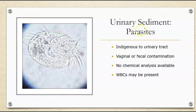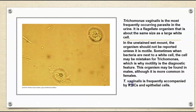Urinary sediment parasites. We can see parasites that are indigenous to the urinary tract, or as vaginal or fecal contamination. There's no chemical analysis available for urinary parasites, and we can also see white blood cells present. Trichomonas vaginalis is the most commonly occurring parasite — a flagellate organism in urine, same size as a big white blood cell. We cannot report this unless it's motile, because you'll see the flapping motion. Sometimes when bacteria are next to a cell, it can be mistaken for Trichomonas, so motility is the diagnostic feature. It can be found in males, although it's more common in females.